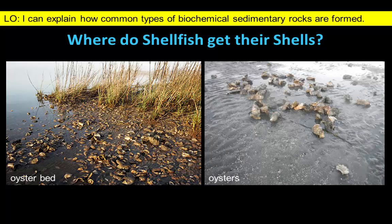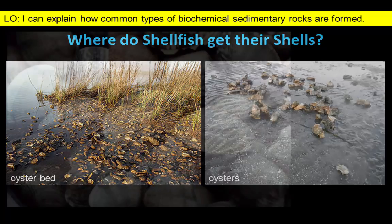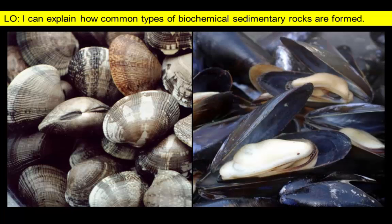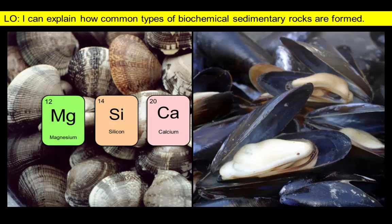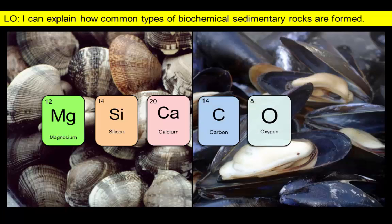The shells that protect shellfish, like these oysters, or clams, or mussels, and even the smallest plankton floating in the ocean, are formed when these organisms extract ions of some common elements from seawater. These elements precipitate out of seawater to build shells, which later collect on the seafloor and are converted into a biochemical sedimentary rock.